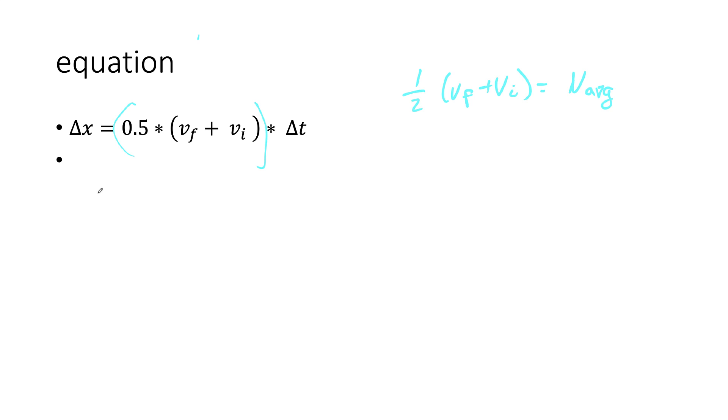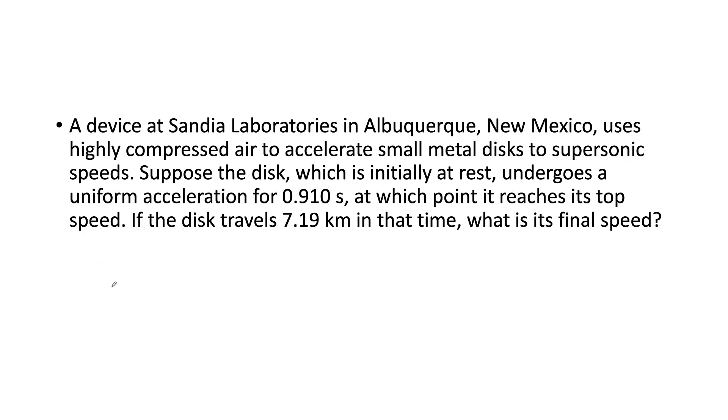What we have is that x, which is displacement, is in meters. Velocity is in meters per second, and of course time is in seconds. We're going to use these three variables for most of this chapter and unit. So let's look at an example problem.